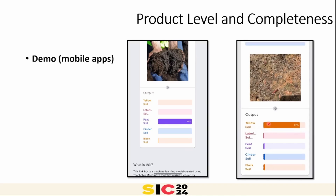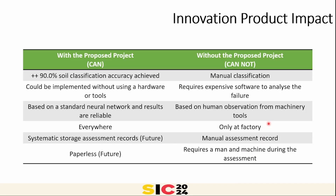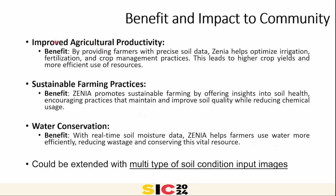Speaking of what our product can deliver: we can promise 90% soil classification accuracy achieved without any hardware — just a handheld mobile app using CNN gives reliable results with the ZINNIA product. The benefits fall into three areas: improved agricultural productivity through precise soil data, sustainable farming practices, and no need for huge power or heavy maintenance during classification processing.